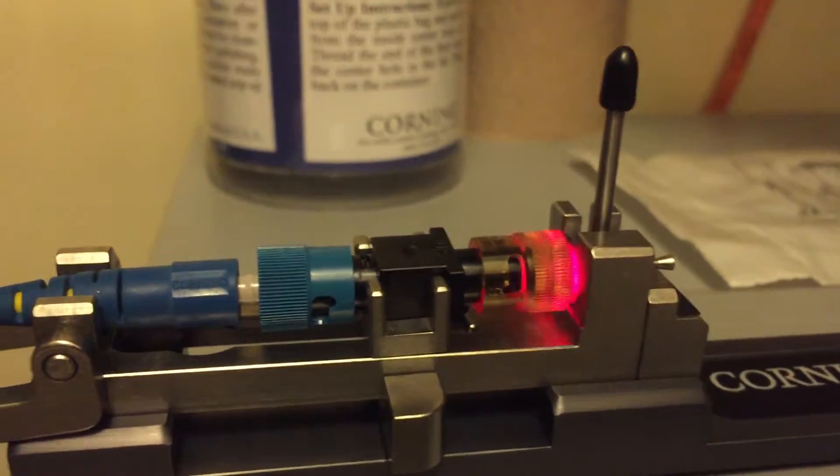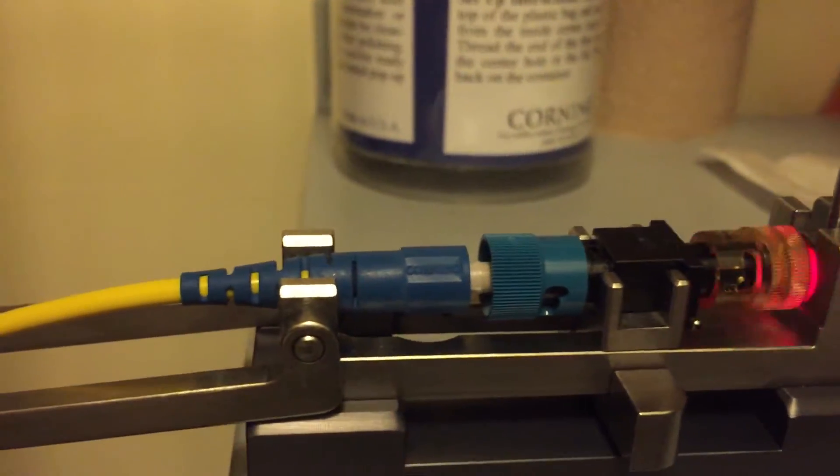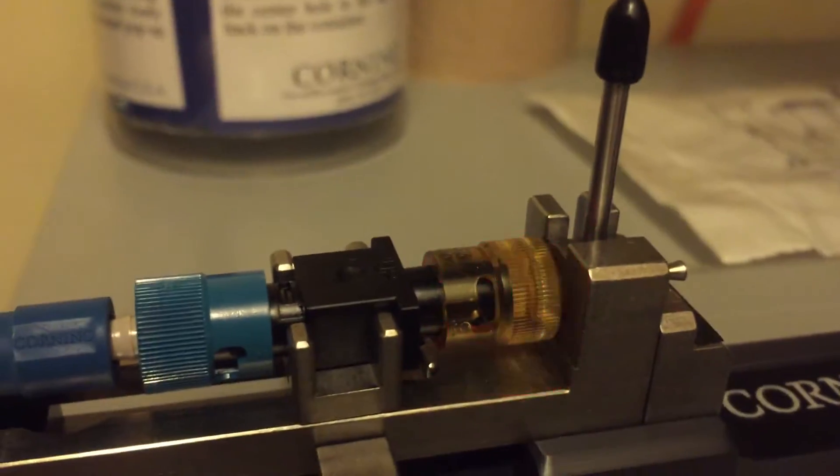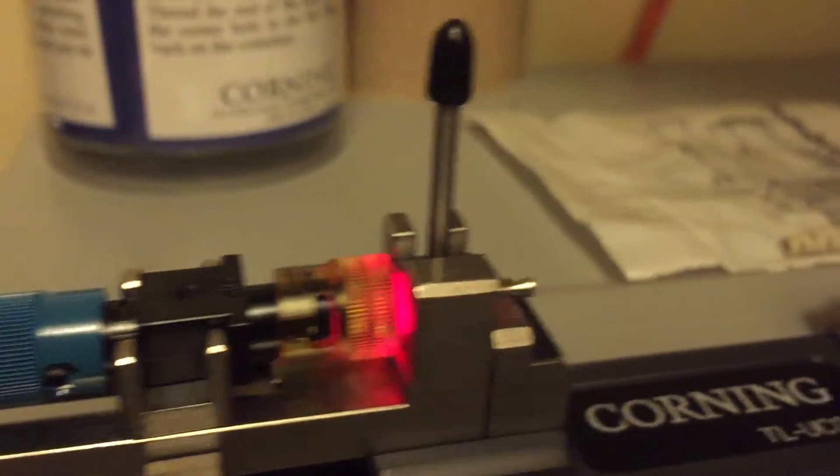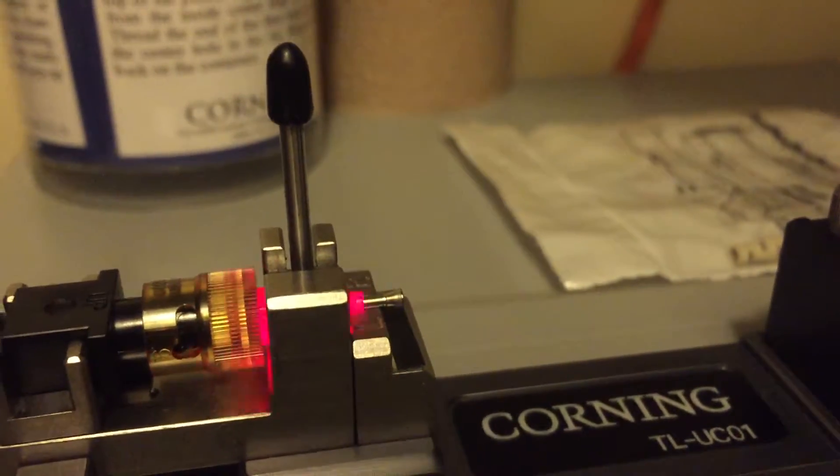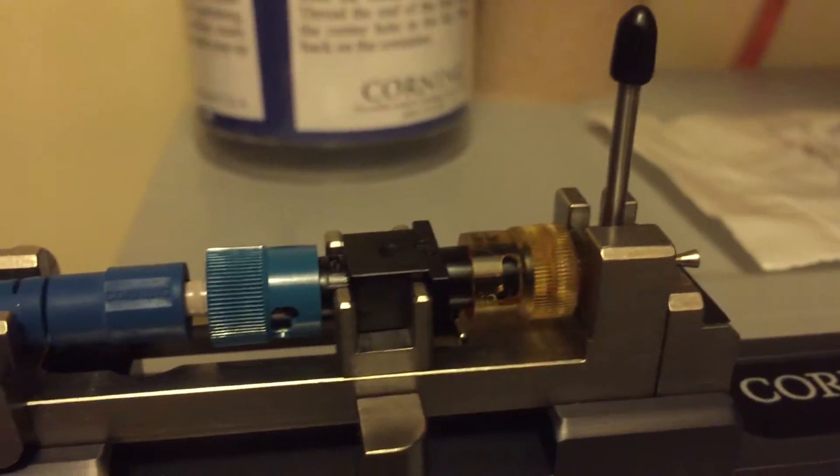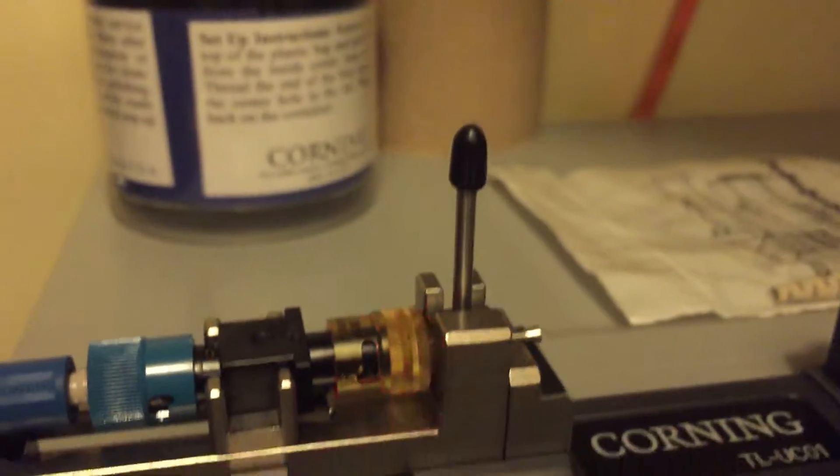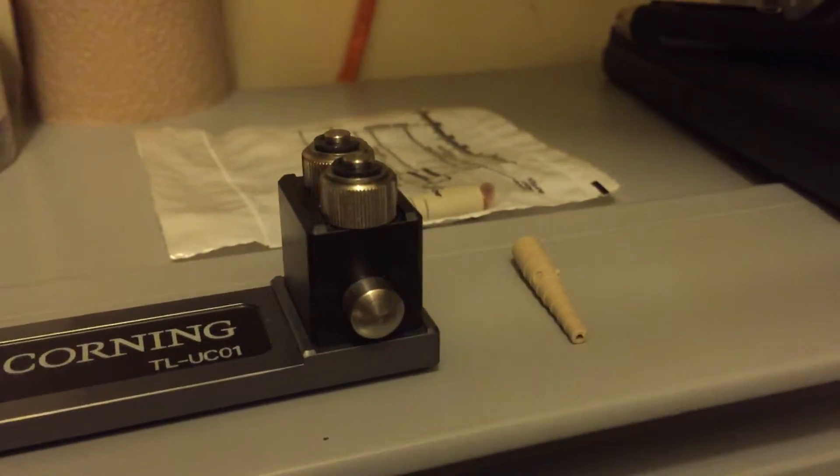I got my Unicam on the crimper and it's connected to my tester which is just sending out a red light that lets you know if it's open or if it's going correctly through the fiber. Note that I've taken off all of the coverings that were on the Unicam when it was in the bag and now I'm going to put the boot on the cable because you don't want to forget about that.